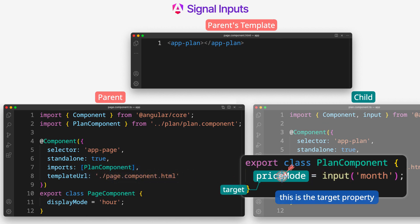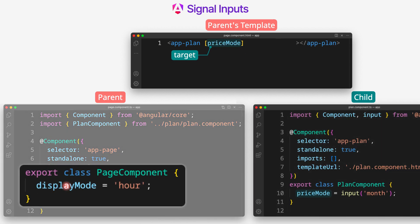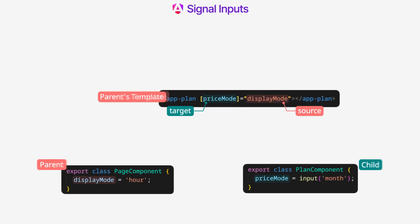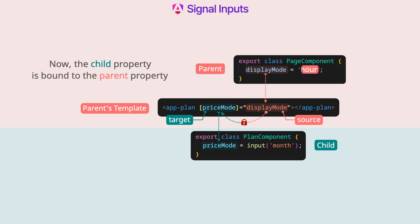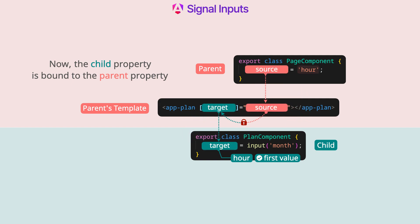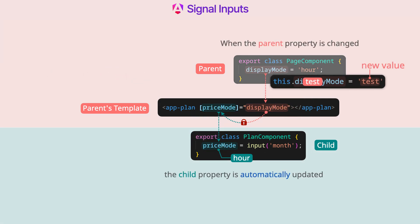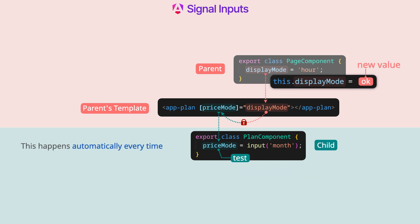This is the target property, and the parent property is the source property. Now the child property is bound to the parent property. When the parent property is changed, the child property is automatically updated. This happens automatically every time, because both properties are bound.